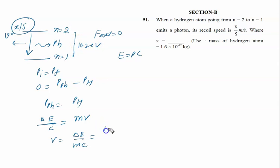ΔE is 10.2 electron volts. Converting to joules, it is 1.6×10^-19 joules divided by mass, which is given as 1.6×10^-27 kilograms, and speed of light is 3×10^8 meters per second. We will further solve it.